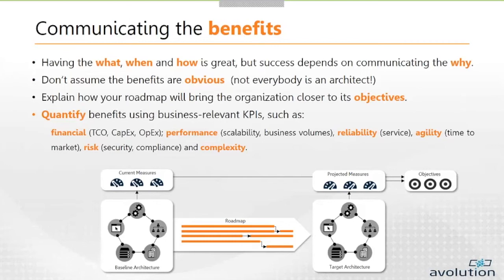There are a number of different KPIs you can use. Ones we commonly work with around architecture are financial KPIs — total cost of ownership, capital expenditure — and what we call the non-functionals. Non-functionals apply at an architecture level: performance (can your architecture scale to process business volumes?), reliability (what's the proportion of time it's up or down?), and agility (what's the time to market?). We've already looked at risk — that could be information security risk, compliance risk, or broad complexity. There are also other KPIs meaningful to business, like customer retention or the volume of new business. At some level, we need to be able to link our architecture to one of these KPIs.